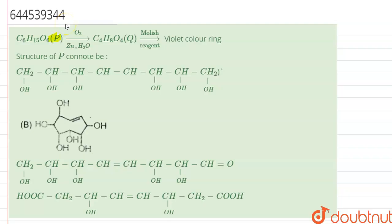have been given that we have a compound P, that is C6H50O6. When it has done ozonolysis in the presence of Zn and H2O, it forms C4H8O4, and this basically gives Molisch test. On the basis of Molisch reagent, it gives a violet color ring.